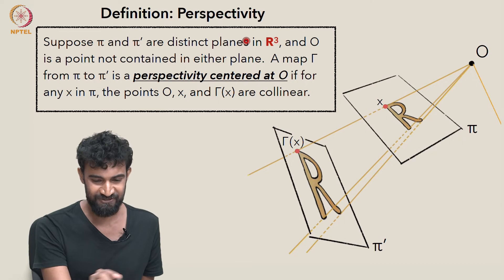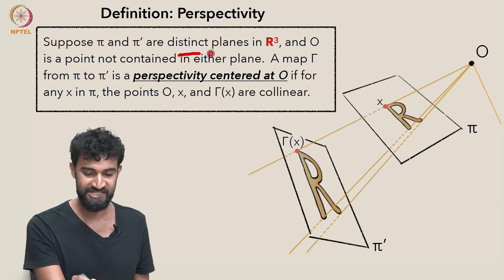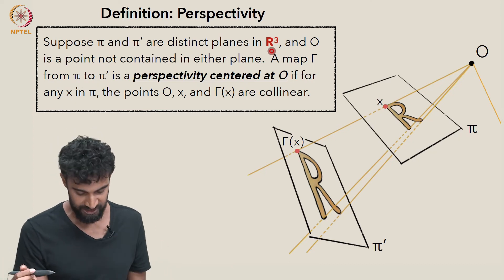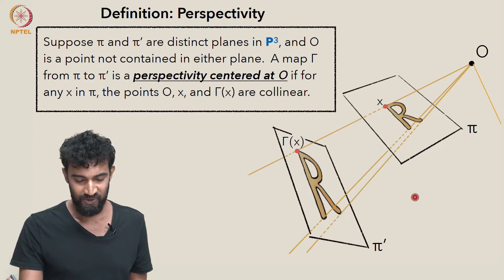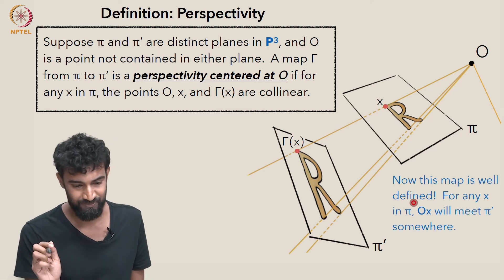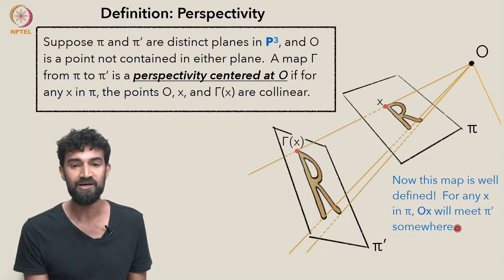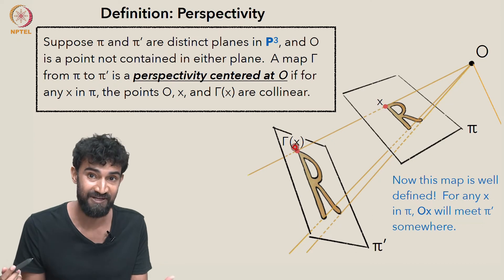All of these lines really do intersect π' as long as we're working in P3. So let's go back to the definition. I wrote that π and π' are distinct planes in R3, and we saw that the definition doesn't quite work out for us. But if we change that to P3, now everything seems to work out much better. The map is well-defined. For any x that we've chosen so far in π, Ox will meet π' somewhere, either at an ordinary point or at a point at infinity of π'.